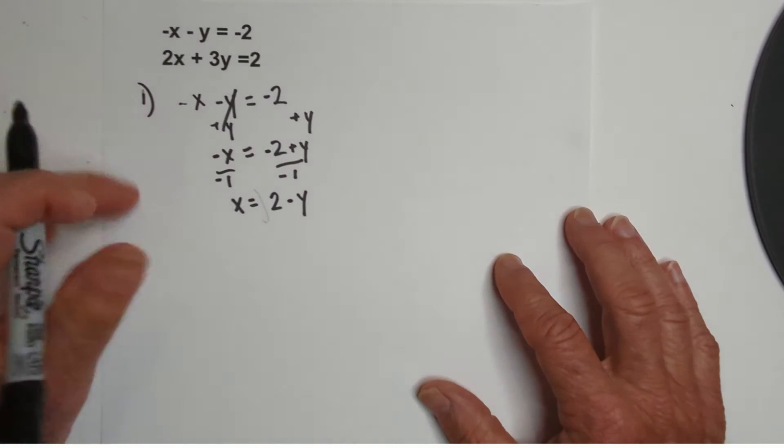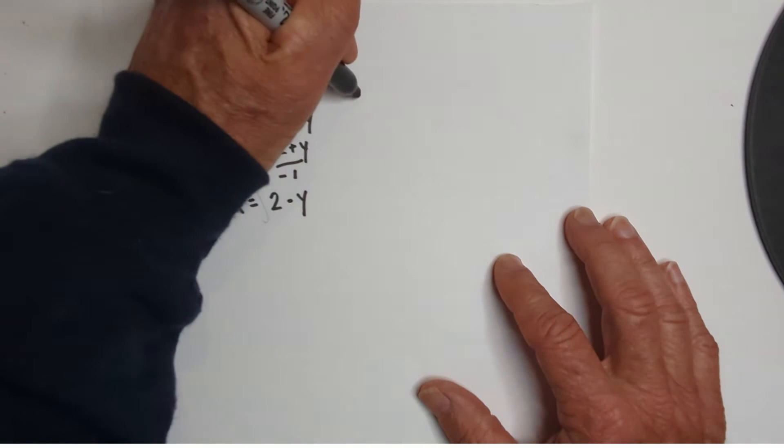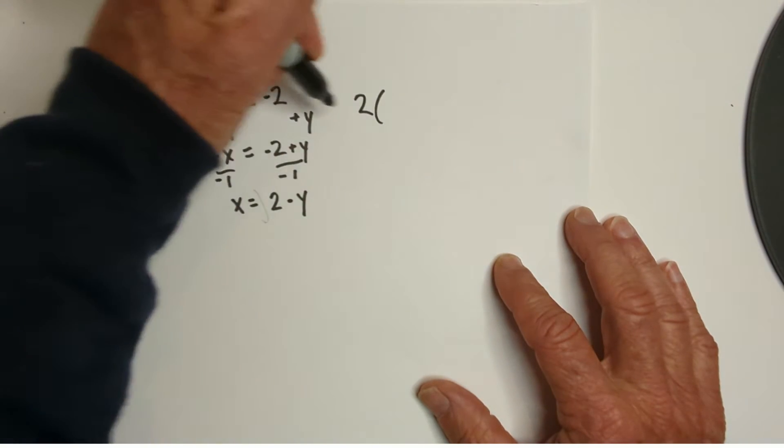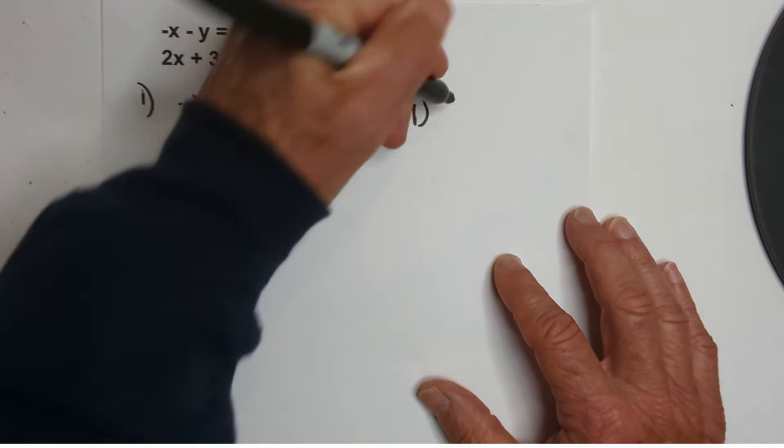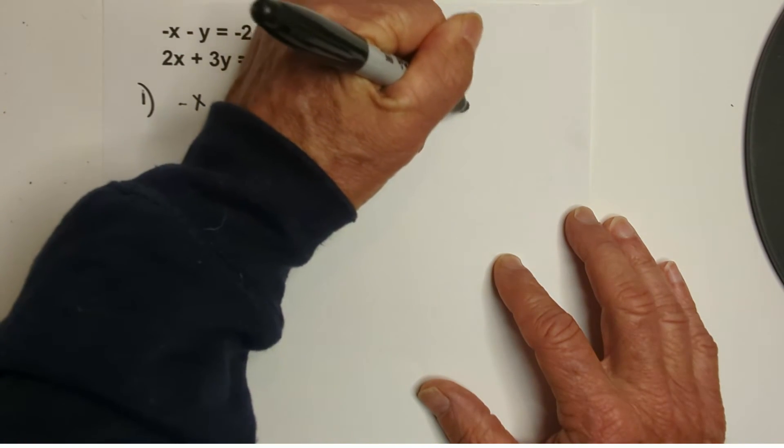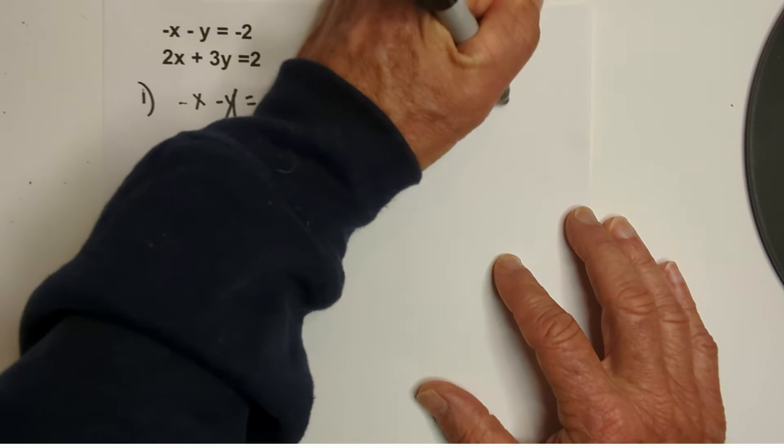Okay. So, let's rewrite this. So, I have 2x. So, I'm going to go 2 times (2 - y). And then I have a +3y = 2.